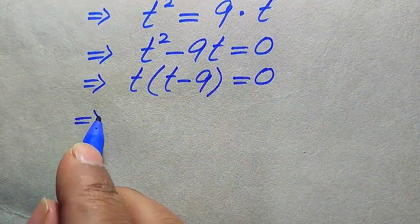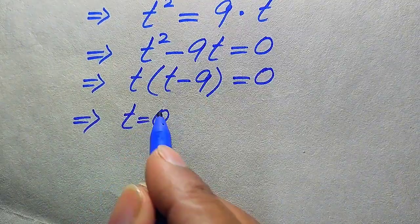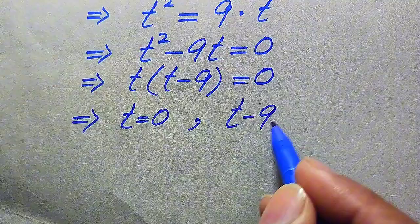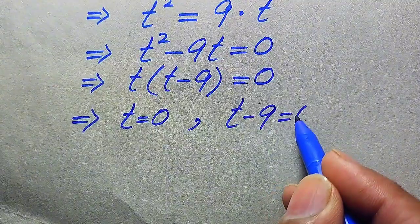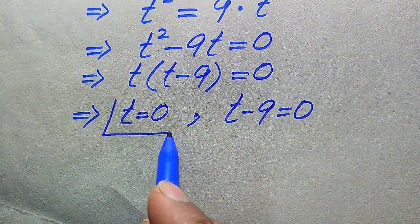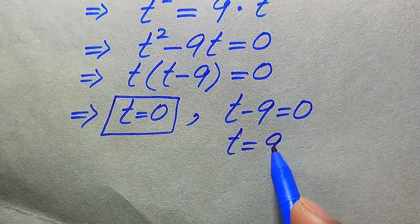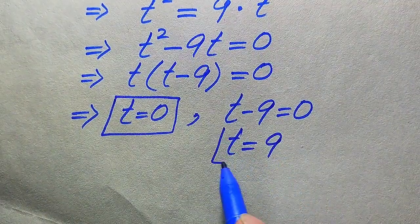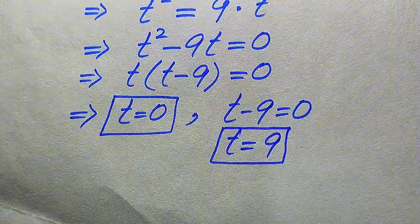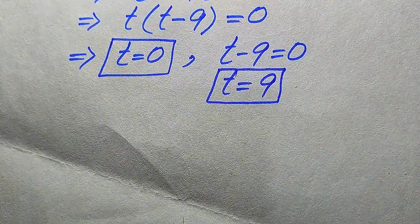We split into two cases. The first case gives t equals 0, which is the first root of the equation. The second case is t minus 9 equals 0, giving t equals 9, which is the second root. So we obtain two roots: t equals 0 and t equals 9.